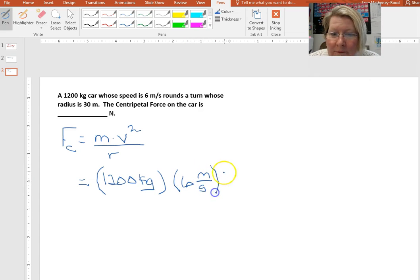And we cannot forget to square that or we won't get the right answer obviously. And then our radius of the curve or the turn that we're taking is 30 meters. So you just multiply 1200 times 6 times 6 divided by 30 and you get 1440 newtons.